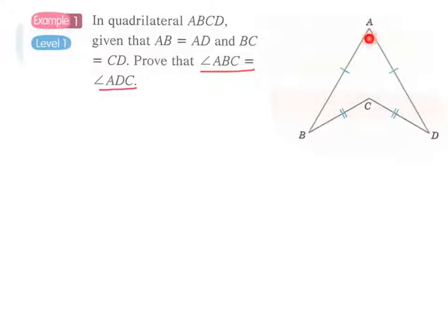And if we cannot find two triangles in the figure, we can simply construct or make our own triangles. And obviously, in this example, we can just simply draw AC. And then we have triangle ABC and ACD.